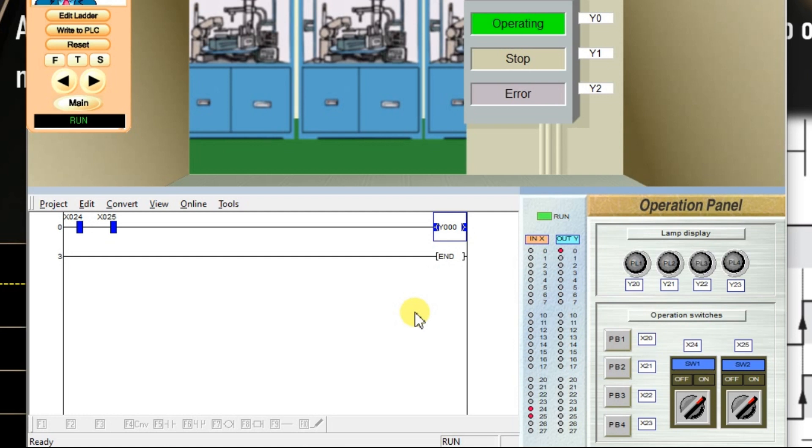In AND logic there may be any number of inputs. It may be 2 inputs, 3 inputs, 4 inputs like that. The output will be turned on when all the inputs are turned on. If all the inputs or any of the inputs are off, the output is off. So this is our logic AND logic. I will meet you in the next session.